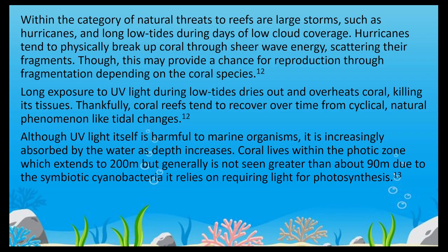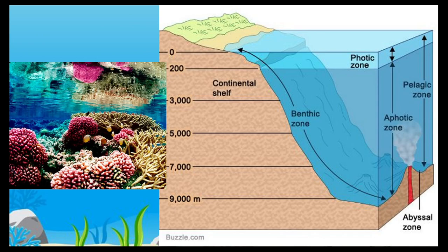Within the category of natural threats to reefs are large storms such as hurricanes and long low tides during days of low cloud coverage. Hurricanes tend to physically break up coral through sheer wave energy, scattering their fragments — though this may provide a chance for reproduction through fragmentation, depending on the coral species. Long exposure to UV light during low tides dries out and overheats coral, killing the tissue, but coral tends to recover pretty quickly from cyclical natural phenomena like tidal changes.